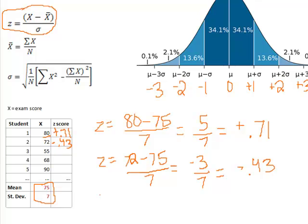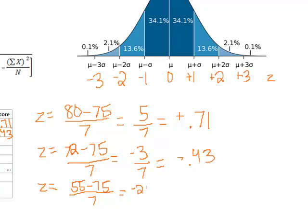The next one is 55. We take 55, subtract 75, divide by 7. This gives us negative 20 over 7, which ends up being negative 2.86. Here we can see that this z-score means the individual's raw score falls 2.86 standard deviations below the mean. So they're quite a ways away from what the average score is considered to be in terms of being away from 75.